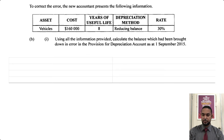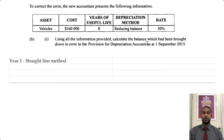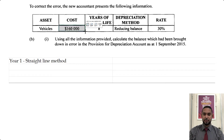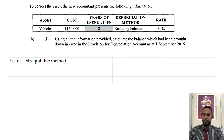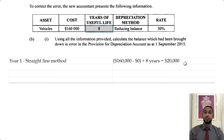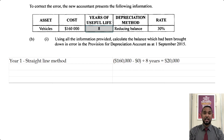So let's take a look at how I approached it. The name of the method in year one was the straight line method. Under the straight line method, we depreciate the asset using the same value every year. The formula is cost minus residual value, all divided by the estimated useful life. The cost of the asset was $160,000. We are given no information as to the residual value, so we assume zero, and we divide by eight years. So we take 160 minus zero, divide by eight, and that gives us $20,000 depreciation in the first year.